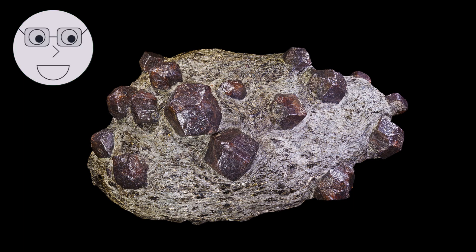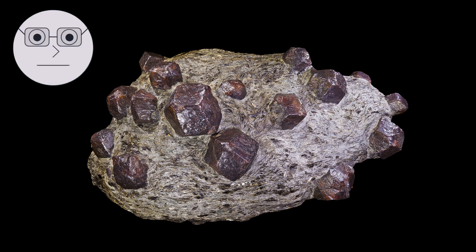Metamorphic rocks are formed from the transformation of existing rocks through heat, pressure, and chemical reactions. The chemical composition of metamorphic rocks is determined by the original composition of the parent rock and the conditions under which it was transformed.